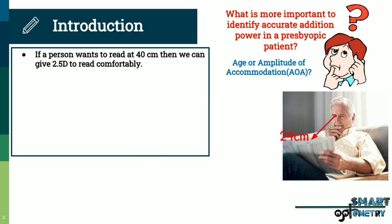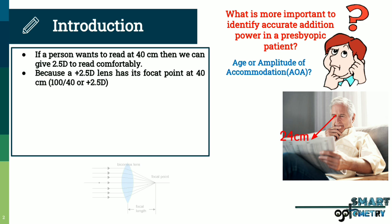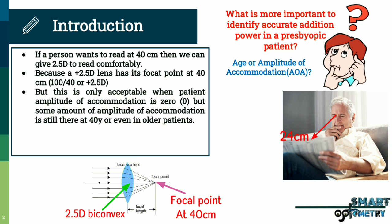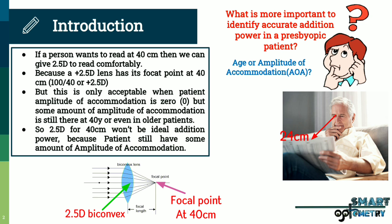If a person wants to read at 40 cm, then we can give 2.5 diopters to read comfortably, because a +2.5 diopter lens has its focal point at 40 cm. This is only acceptable when the patient's amplitude of accommodation is zero, but some amount of amplitude of accommodation is still present at 40 years or even in older patients. So 2.5 diopters for 40 cm won't be the ideal addition power, because the patient still has some amplitude of accommodation.